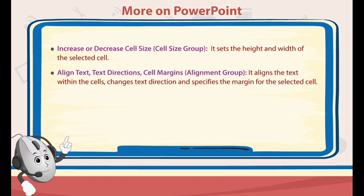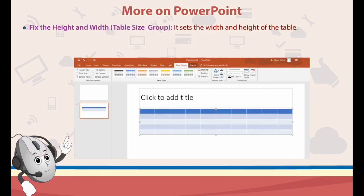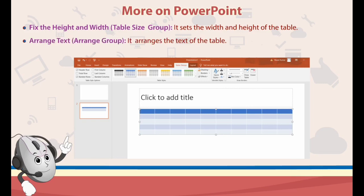8. Align Text, Text Directions, Cell Margins — Alignment group. It aligns the text within the cells, changes text direction and specifies the margin for the selected cell. 9. Fix the Height and Width — Table Size group. It sets the width and height of the table. 10. Arrange Text — Arrange group. It arranges the text of the table.